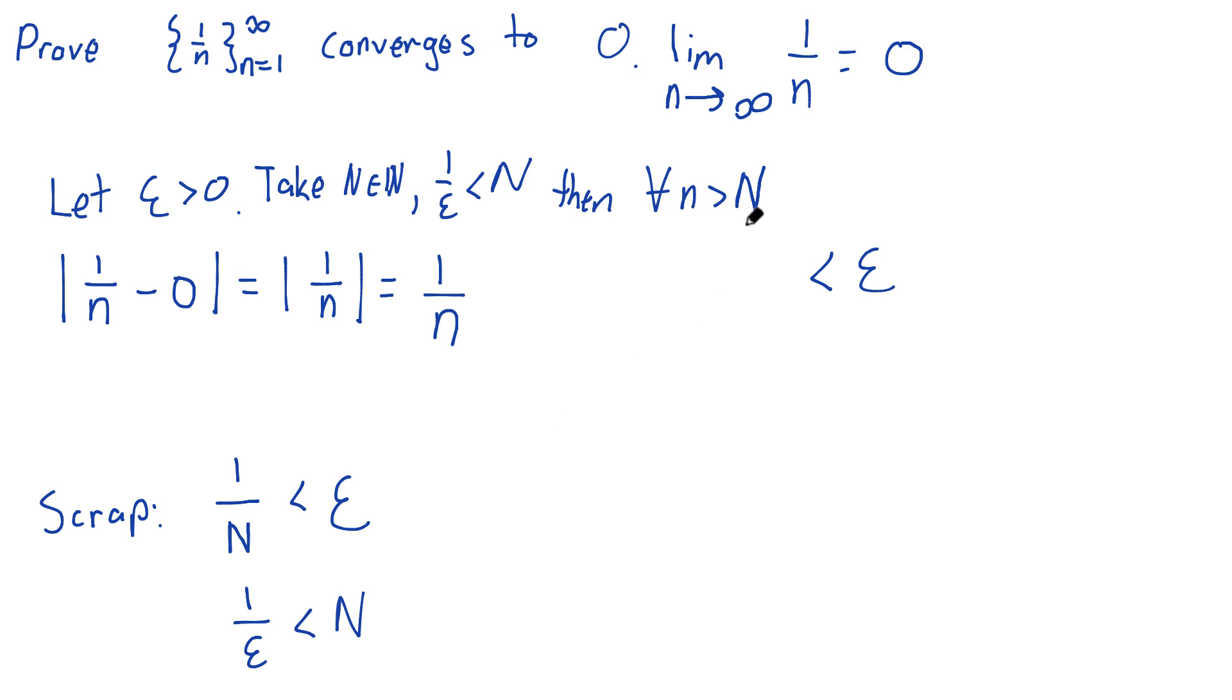since little n is greater than capital N, doesn't that mean the exact same thing as 1 over little n is less than 1 over capital N? I think it does. I think I'll just put that right here. 1 over n is less than 1 over capital N.